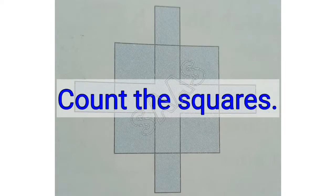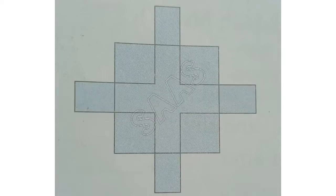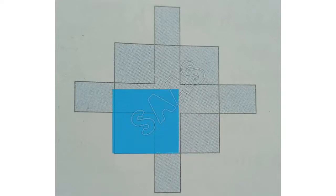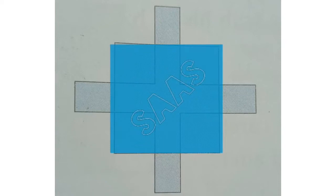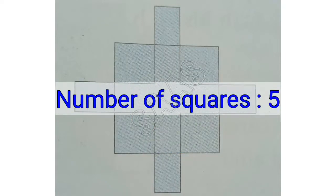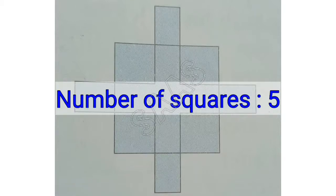The first question is to count the number of squares in the given picture. Let's count the squares. 1, 2, 3, 4, 5. There are 5 squares in total.